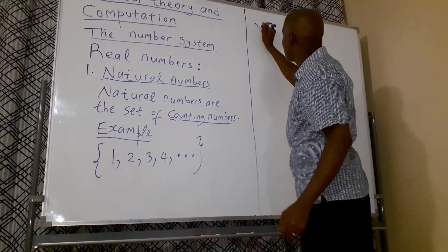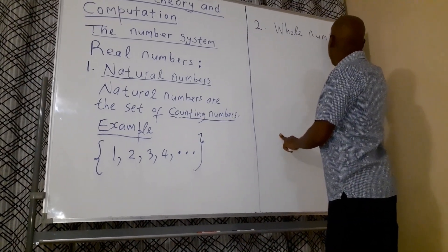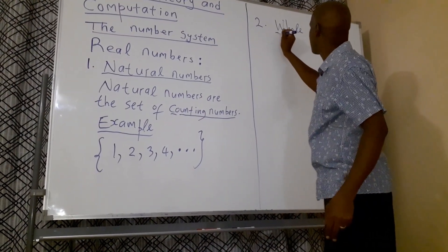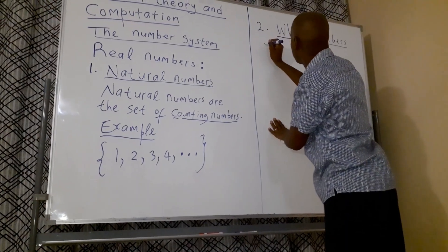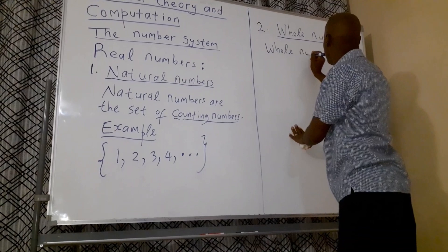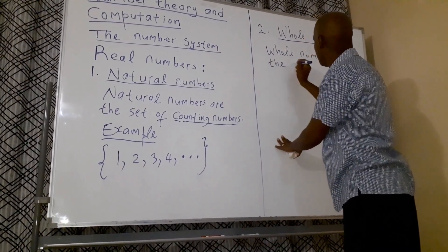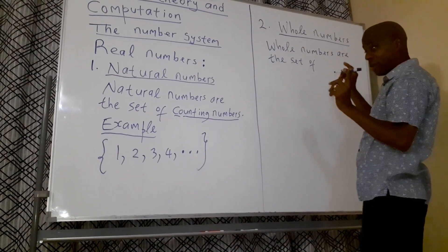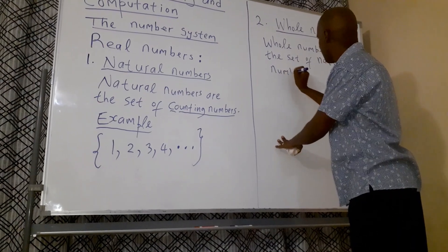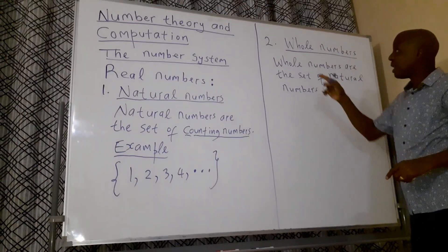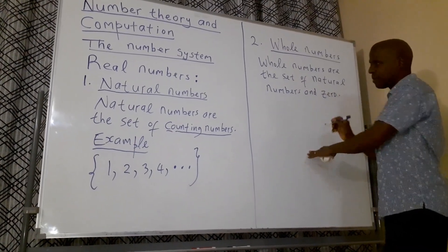The next one is called whole numbers. Now whole numbers represent natural numbers and zero — so it is a set of natural numbers inclusive of zero.